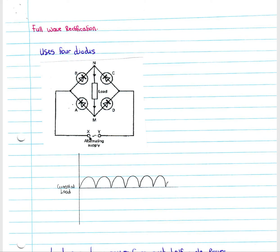Looking at the other direction, flowing from X: we flow from X up and would go through B — can't go through A because it's the opposite direction. It flows through B, would not go to C because it cannot go through C in that direction, so it flows down through the load. It would not flow back towards X and therefore it goes to Y.